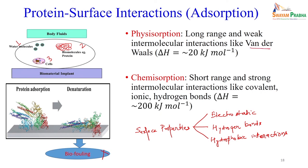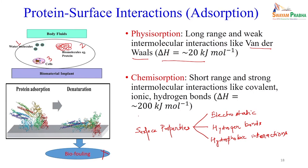Depending on the type of intermolecular interactions, adsorption is classified as physical adsorption or chemical adsorption. If only van der Waals (long-range, weak) interactions are present, it is physical adsorption, with ΔH ≈ 20 kJ/mol. If short-range, strong interactions like covalent, ionic, or hydrogen bonds are present, it is chemisorption, with ΔH almost 10 times higher than physical adsorption.